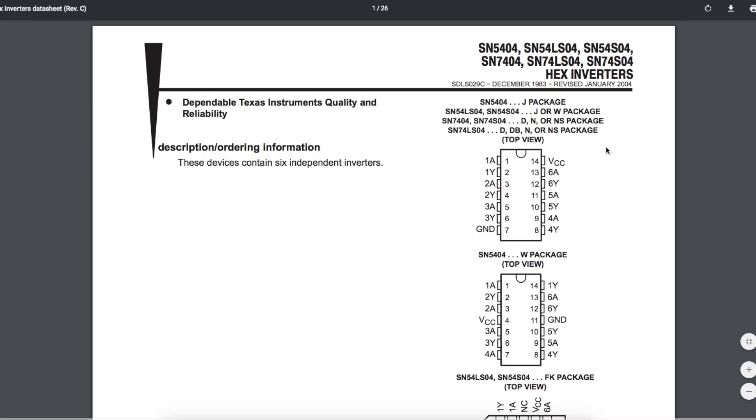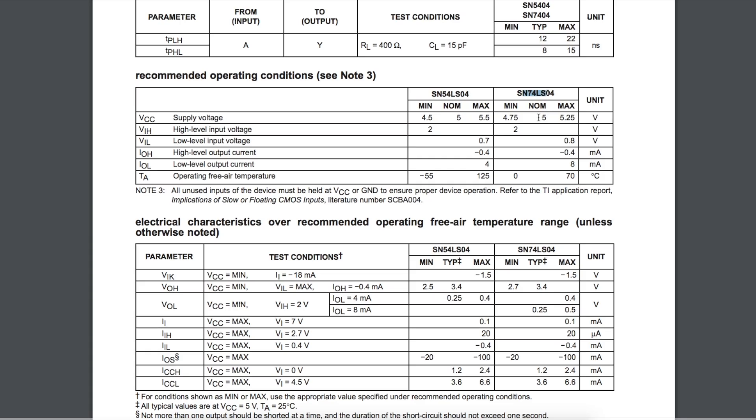So let's go through an example. If we look at 74LS series, which is a 5 volt part, an input voltage of at least 2 volts or higher is a logic high valid input. And for a logic low, the voltage has to be 0.8 volts or less.